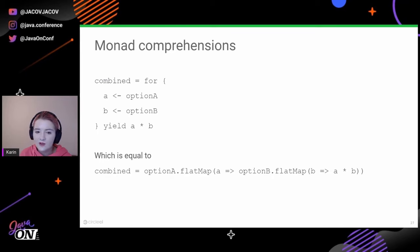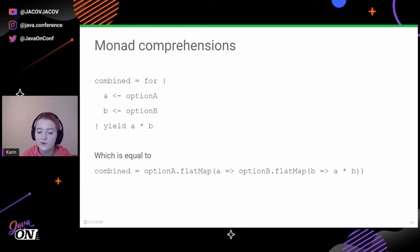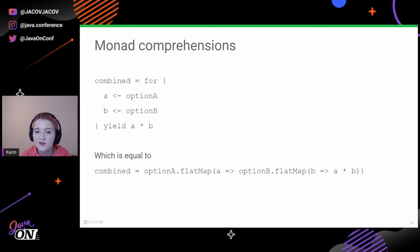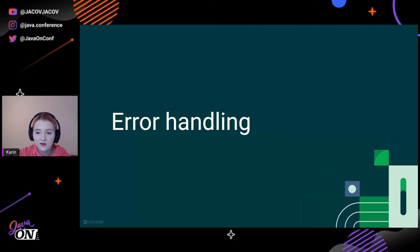Other languages don't have monad comprehensions out of the box. However, in Java and Kotlin you can introduce them via external libraries — for Kotlin that would be Arrow. Let's look at another useful pattern for functional programming on a day-to-day basis: error handling.